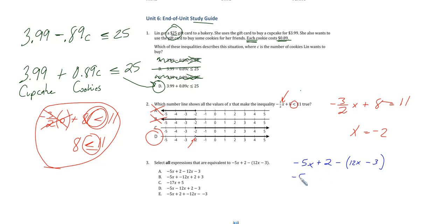So negative 5x doesn't get changed, plus 2 does not get changed, but when this minus right here becomes a plus, we add the opposite of what follows.